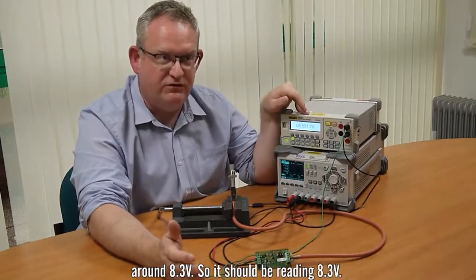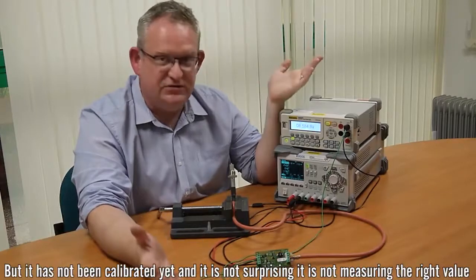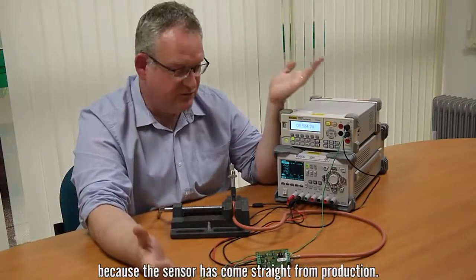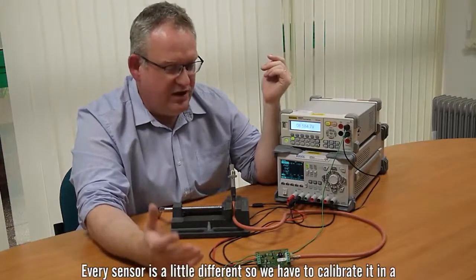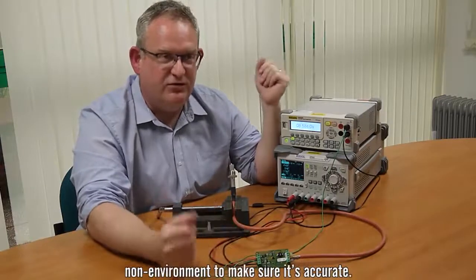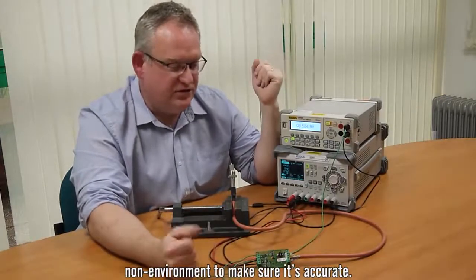It should be reading 8.3 volts but it's not been calibrated yet and it's not surprising it's not measuring the right value because the sensors come straight from production. So every sensor is a bit different so we have to calibrate it in a known environment to make sure it's accurate.